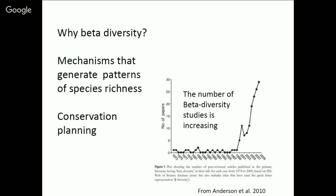So why beta diversity? There are two reasons to really focus on beta diversity. One is that we can learn about the mechanisms that generate patterns of species richness. Secondly, beta diversity, or the change in species composition across space, is fundamental for conservation planning. It's basically the base of most conservation algorithms, such as C-Plan or different sorts of algorithms like that. Also, studies in beta diversity have been increasing tremendously over time.